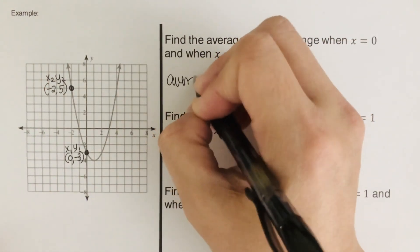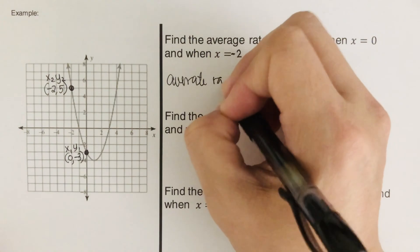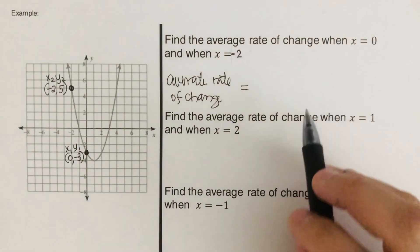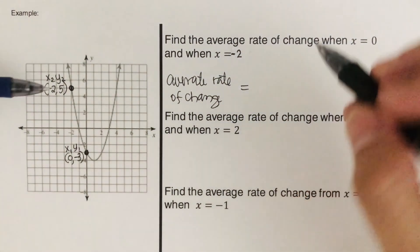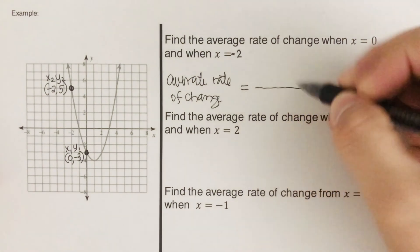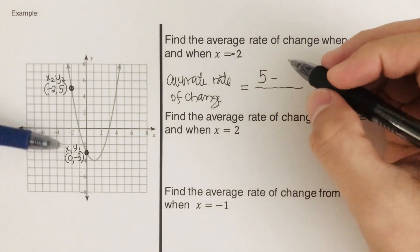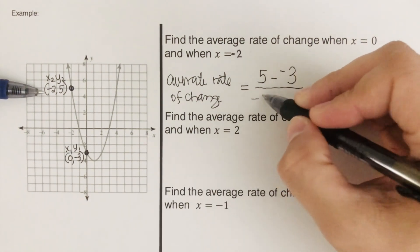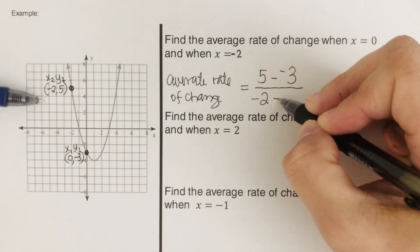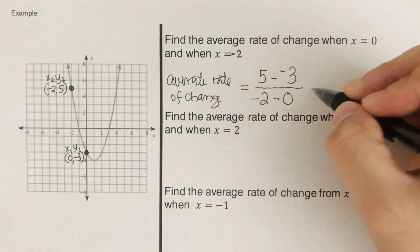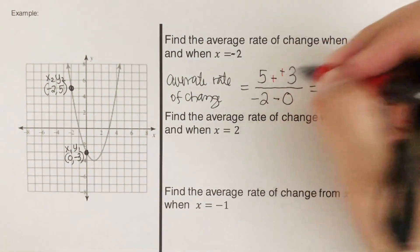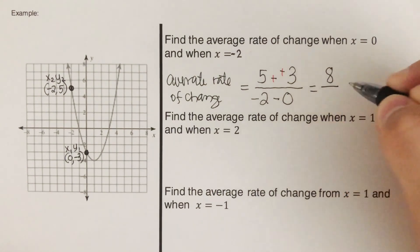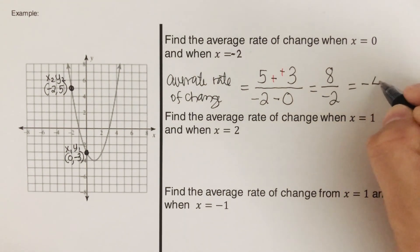The average rate of change can be computed using the same equation. Y sub 2 is 5, minus y sub 1 which is negative 3, over x sub 2 which is negative 2, minus x sub 1 which is 0. Changing the double negative to plus, that comes out to positive 8 over negative 2, so the answer is negative 4.